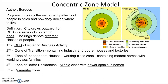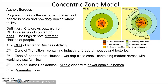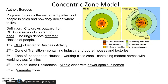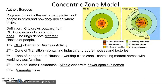At the very center of the model, just like in every single one of our models, is the CBD — the Central Business District — the center of business activity. Immediately surrounding the CBD, we have the zone of transition, which contains industry, poor houses, and factories — low-income housing and industry. Moving out to the third ring, we have the zone of independent houses, our working class zone, which contains modest homes with working class families.